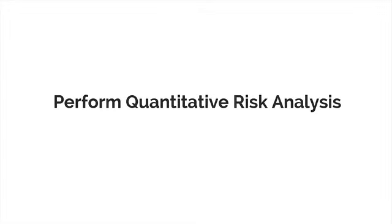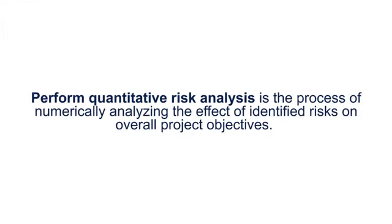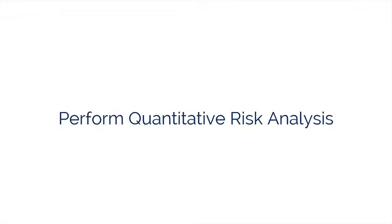The fourth process of project risk management is called Perform Quantitative Risk Analysis, and it's the process of numerically analyzing the effect of identified risks on overall project objectives. This process is performed on risks that have been prioritized by the preceding process, Perform Qualitative Risk Analysis, and you have determined that they are or can potentially and substantially impact the project. This process analyzes the effect of those risk events.